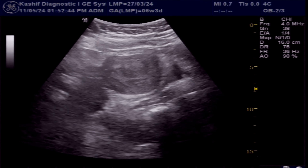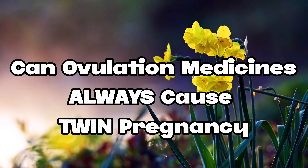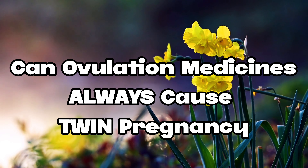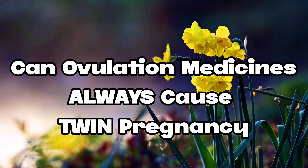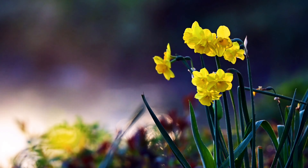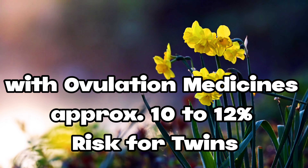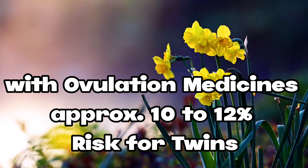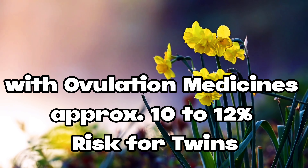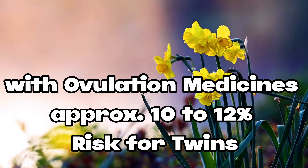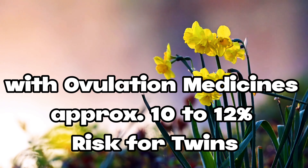Many females ask questions about twins — can ovulation medicines cause twin pregnancy? The answer is that naturally twin pregnancy occurs in about 2-4% of all pregnancies, and with ovulation medicine, this rises to about 10-12% of all pregnancies.